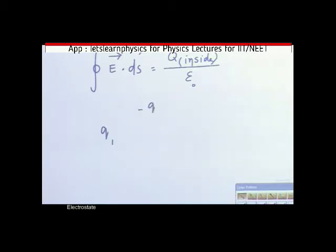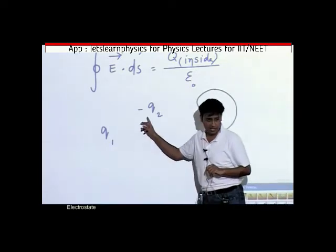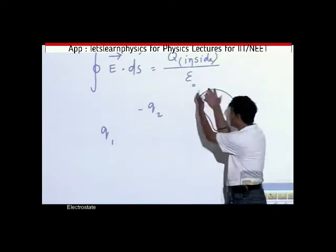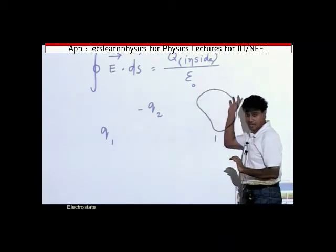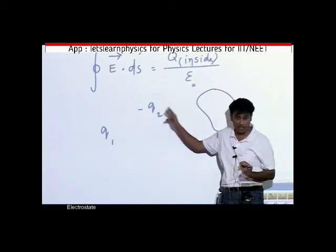Suppose there are two charges: Q1 and minus Q2. And this is a closed surface. Because of Q1 and because of minus Q2, if I take flux from it,